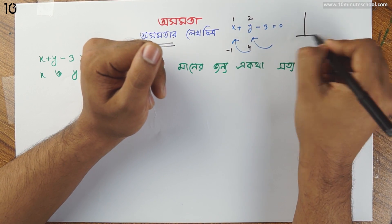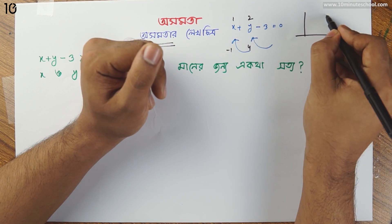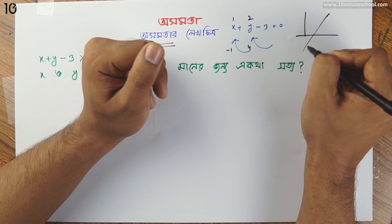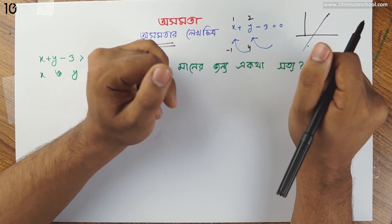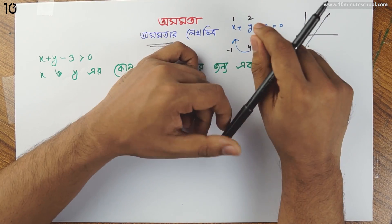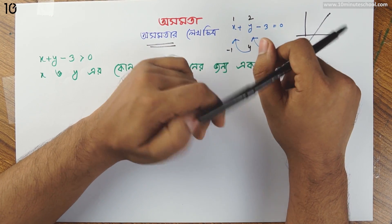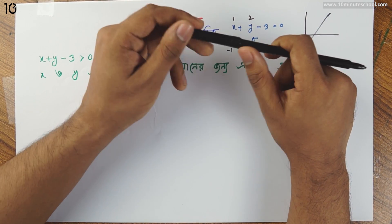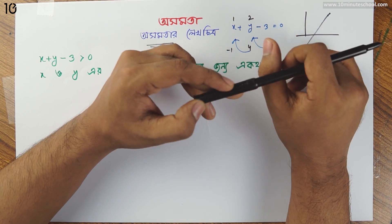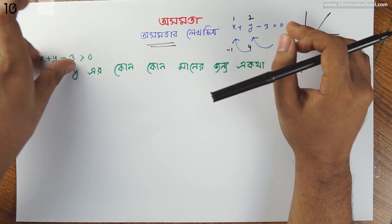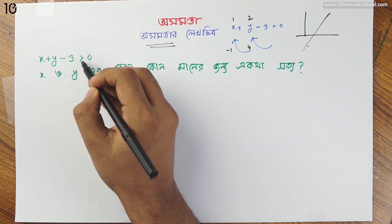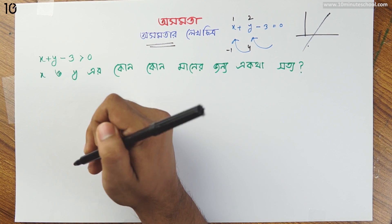We will have to do that in order to show the same thing, and add the same thing to the other side. So, x plus y minus 3 is greater than 0.